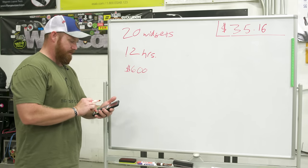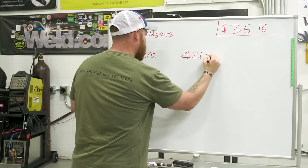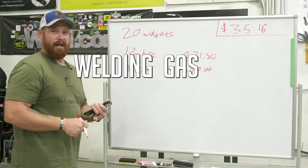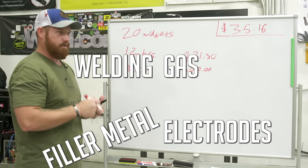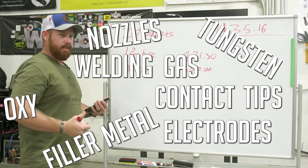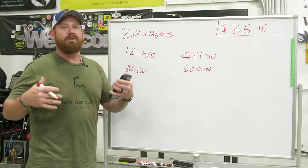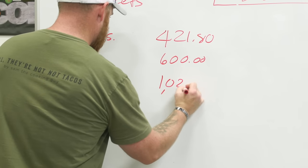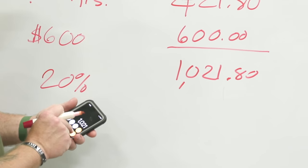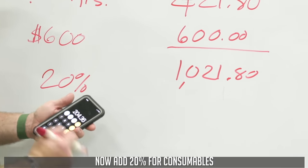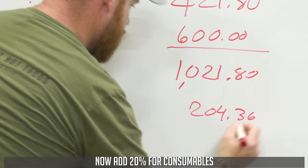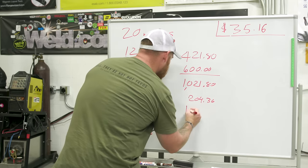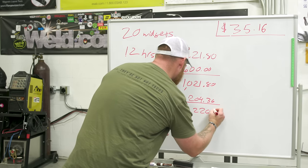So: time and material — 12 hours at $35.15 per hour is $421.80 in labor, plus $600 in materials, giving you $1,021.80. Now comes consumables. You have to supply welding gas, electrodes or filler metal, tungsten, contact tips, nozzles, oxyacetylene, grinding discs — anything that gets consumed during the process or causes excessive wear. What I did when running my business was add 20%: $1,021.80 times 0.20 equals $204.36 for consumables. Adding those together brings you to $1,226.16.